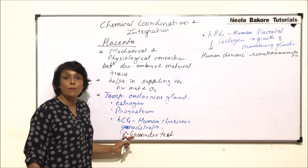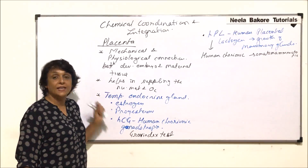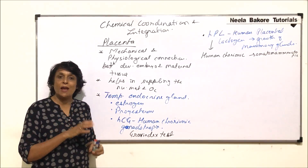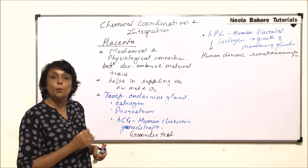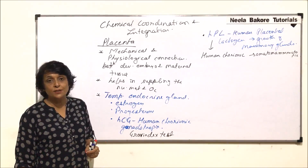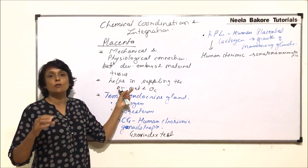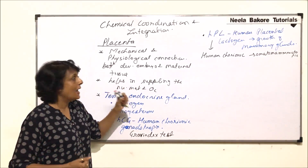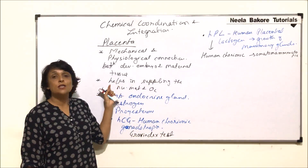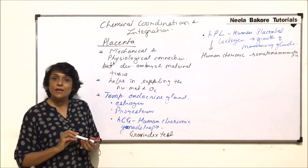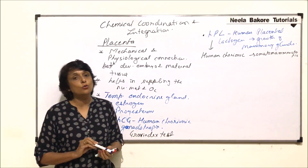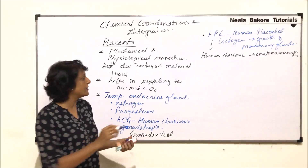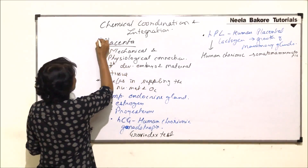So these are four hormones from the placenta. Placenta, as we said, is a temporary endocrine gland. Its primary function is the connection between the fetus and the maternal tissue, supplying all nourishment from the mother's body to the developing embryo.